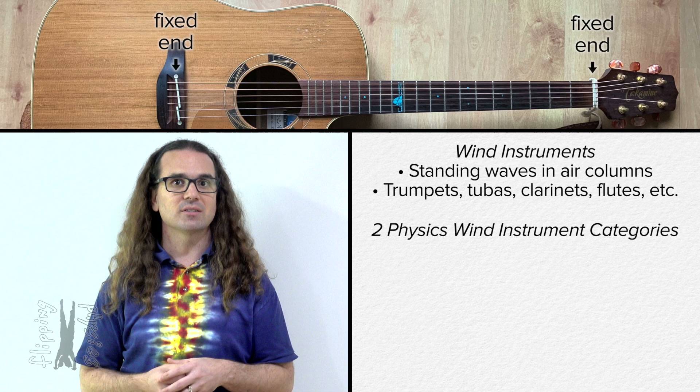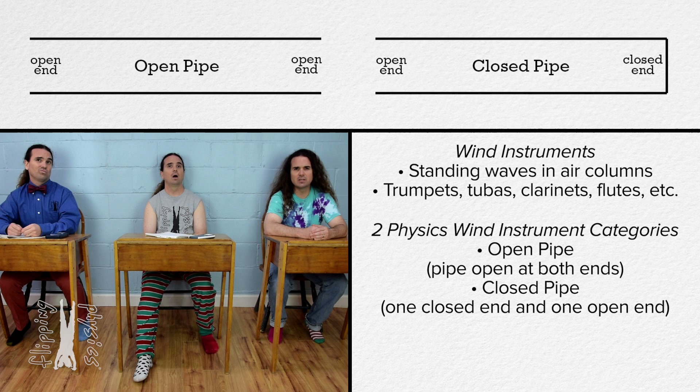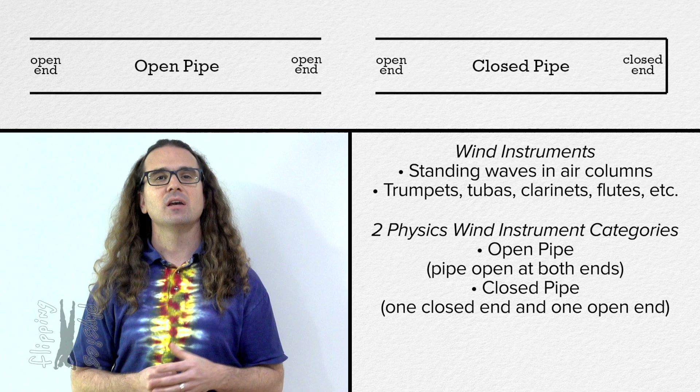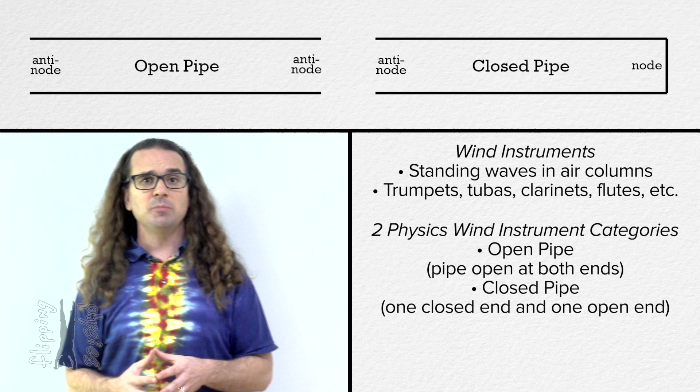There are two physics categories of wind instruments. There are open pipe wind instruments, which are a pipe open at both ends, and there are closed pipe wind instruments, which are closed on one end and open on the other. An instrument closed on both ends is called a drum, which is not a wind instrument. The two different types of ends have different boundary conditions: an open end creates an anti-node and a closed end creates a node.